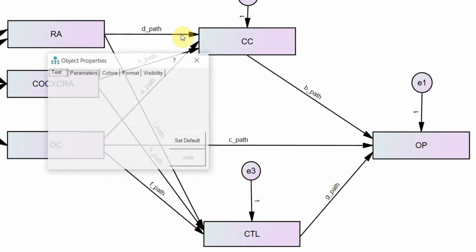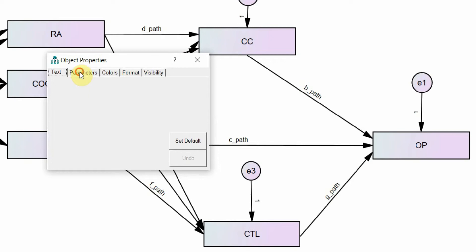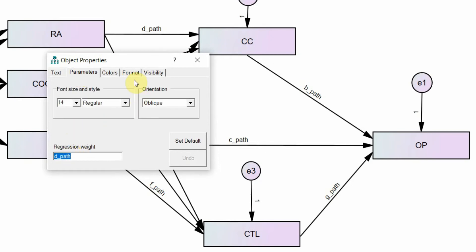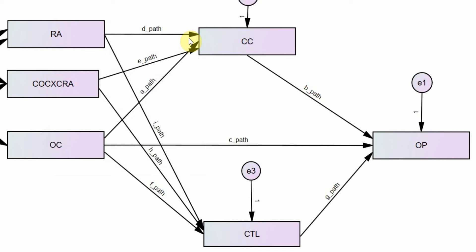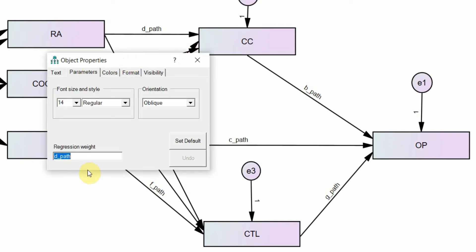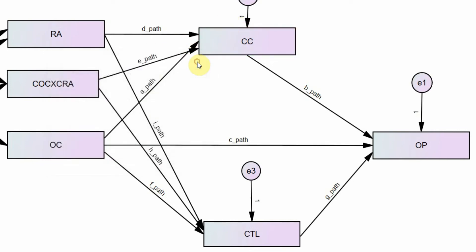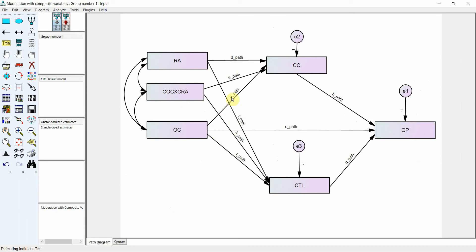Each particular path is named — D path, B path, and so on. So you just double click on it, go to parameters and name these parameters. Now, in order to find out the indirect effects, or whether or not your indirect effects are moderated, you need to create user-defined estimates.